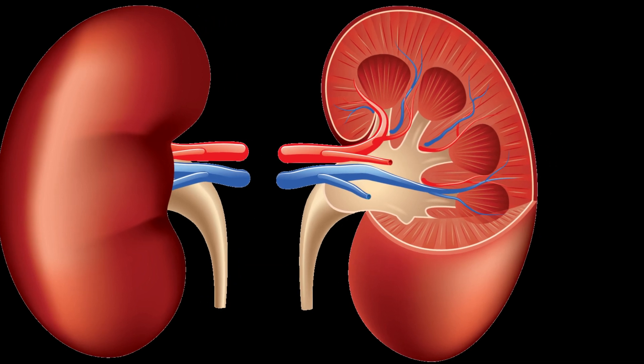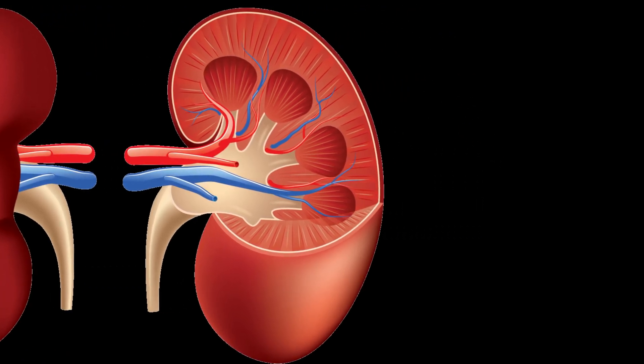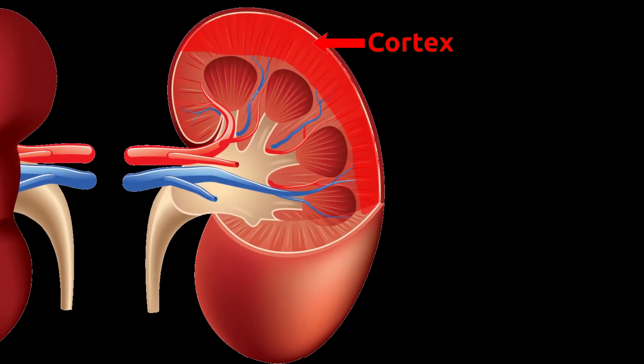Inside the renal capsule, the outer layer of the kidney is called the cortex. The cortex is soft and made of vascular tissues.